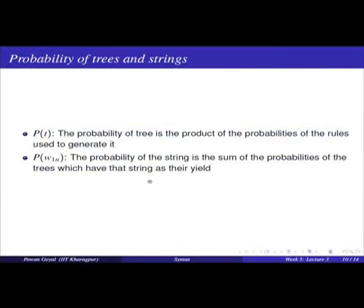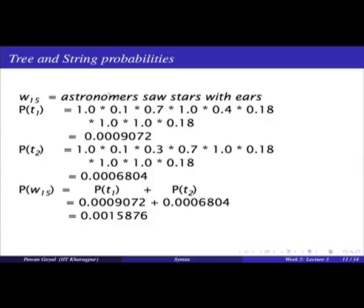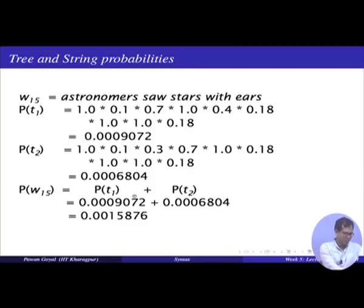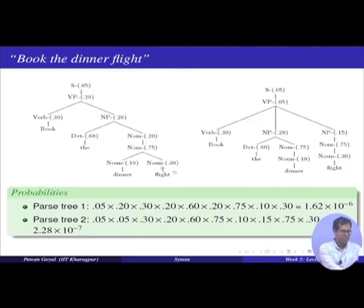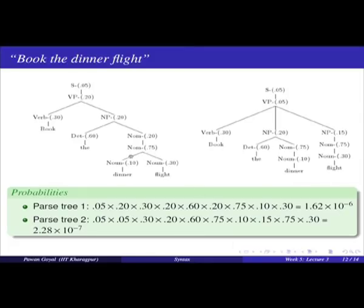The probability of a sentence is the sum of probabilities of all parse trees that yield that string. For example, if there are two parse trees PT1 and PT2, the probability of the sentence is PT1 + PT2. For the sentence 'book the dinner flight,' one parse has probability 1.62 × 10⁻⁶ and another has probability 2.28 × 10⁻⁷, so we can immediately see which parse is the more likely interpretation.